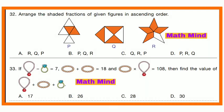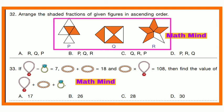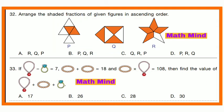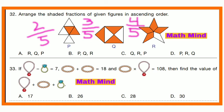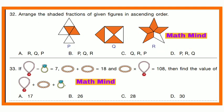Question No. 32: Arrange the shaded fractions of figures P, Q, and R in ascending order. In P, 2 out of 5 triangles are shaded = 2/5. In Q, 3 out of 5 = 3/5. In R, 4 out of 5 = 4/5. Ascending order: 2/5, 3/5, 4/5 — that is P, Q, R. Option B is correct.